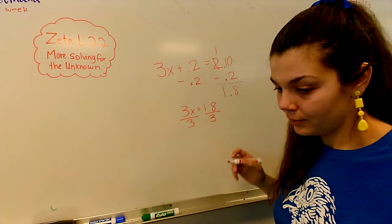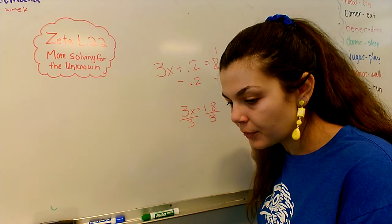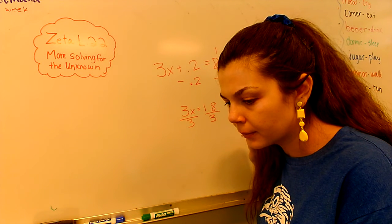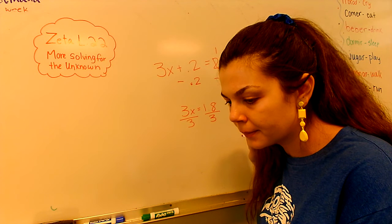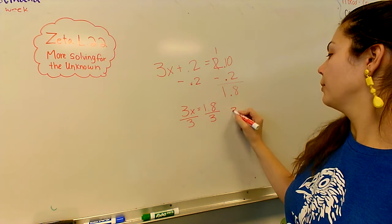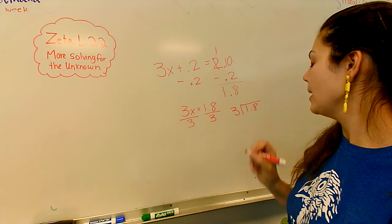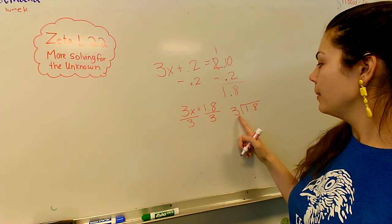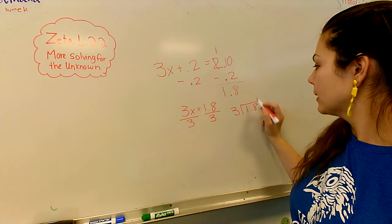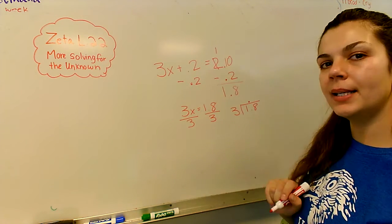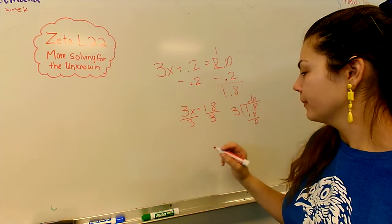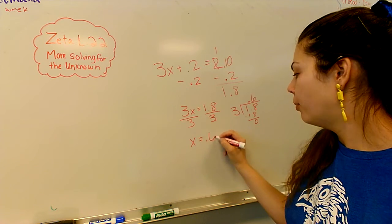Okay, so now we get to do our division. So we have 3 divided by 1.8. How many 3s go into 1? None. So I have to go past my point. Blank. It shoots up. How many 3s go into 18? 6. Minus 18 equals 0. All right, so my x equals 0.6.